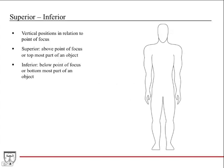Superior and inferior — you want to have a point of focus. On this diagram, the point of focus is the chest. Superior to that is the head, so the head is superior to the chest. Inferior would be the abdomen or the pelvis area, which is inferior to the chest. Similarly, the hand is inferior to the shoulder, and the shoulder is superior to the hand.